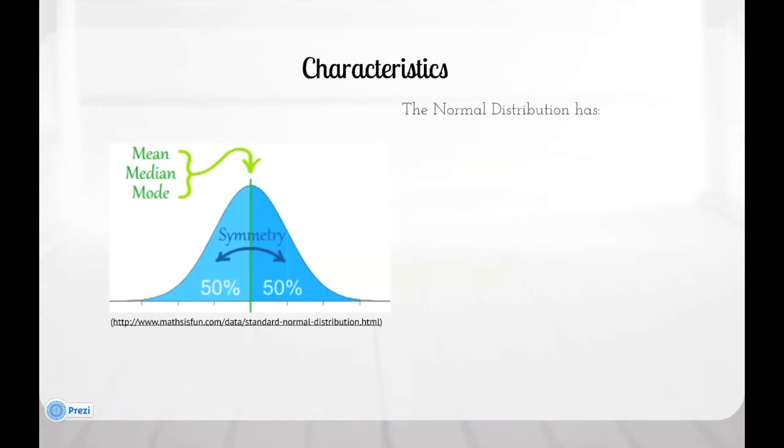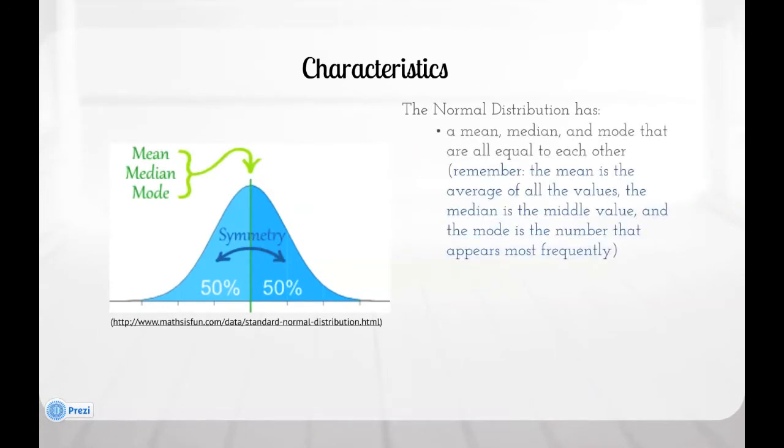Characteristics: The normal distribution has a mean, median, and mode that are all equal to each other. Remember, the mean is the average of all the values, the median is the middle value, and the mode is the number that appears most frequently.